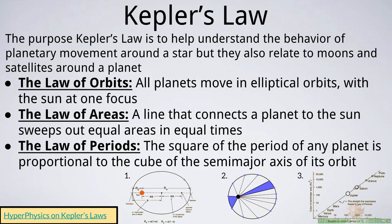There are three Kepler's laws, and their purpose is to help us understand the behavior of planetary movement around the sun. They also relate to how moons and satellites revolve around a planet. The first is the law of orbits: all planets move in elliptical orbit with the sun at one focus. The second is the law of areas: a line connecting a planet to the sun sweeps out equal areas in equal times. The third is the law of periods: the square of the period of any planet is proportional to the cube of the semi-major axis of the orbit.